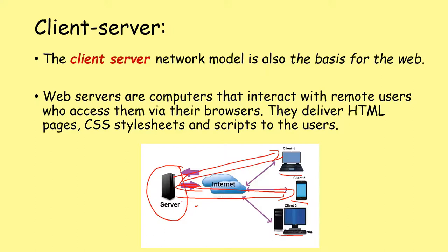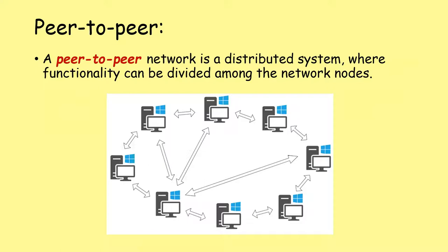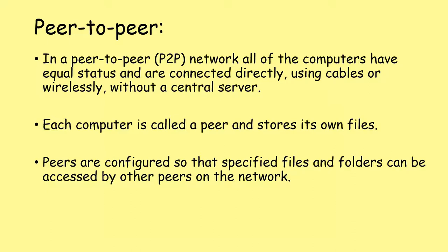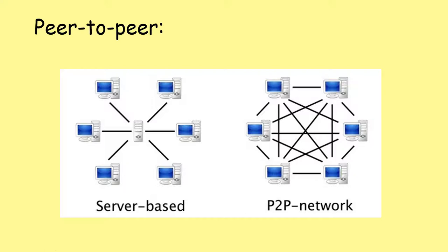The other network architecture we need to know about is peer-to-peer. A peer-to-peer network is a distributed system where functionality can be divided among all the network nodes. In a peer-to-peer (P2P) network, all computers have equal status — there are no clients and no servers — and they're all connected directly using cables or wirelessly without a central server. Each computer is called a peer and stores its own files. Peers are configured so that specific files and folders can be accessed and shared by other peers. This is quite different from server-based architecture, where the server holds all the files and resources centrally.